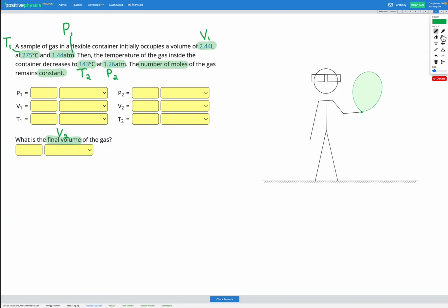So let's fill out our work table here. This time we've got PV and T before and after. So our initial volume is 2.44 liters. Our initial temperature is 275 degrees C.